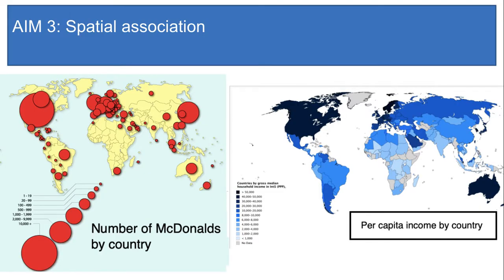Let's look at some examples. Here is our map of McDonald's again and now I want to compare it to another map — per capita income by country. By comparing these two maps what I'm asking is: is it possible that the number of McDonald's locations in a country is correlated with the country's wealth? I'll make a hypothesis: wealthier countries will have more McDonald's because the population can afford to buy food instead of cooking their own. Let's test out my hypothesis by comparing the two maps.